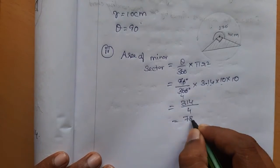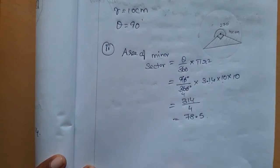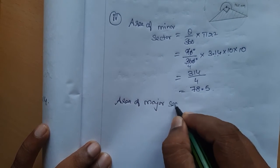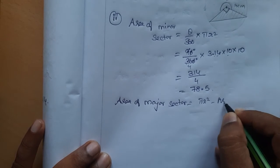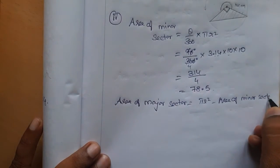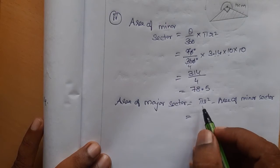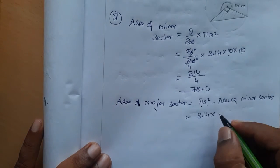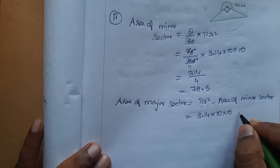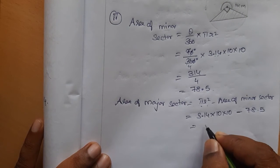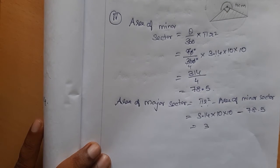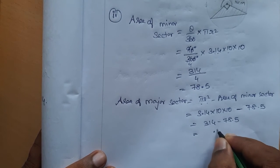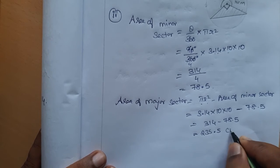From the minor sector, we get 78.5 cm². Area of major sector = πr² minus area of minor sector = 3.14 × 10 × 10 − 78.5 = 314 − 78.5 = 235.5 cm². So the area of the major sector is 235.5 cm².